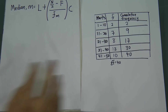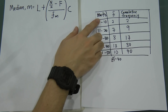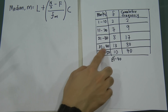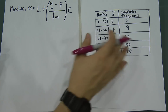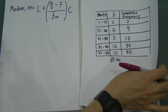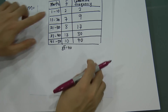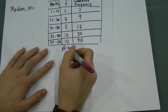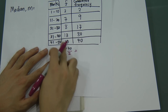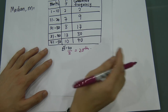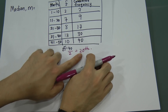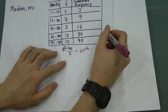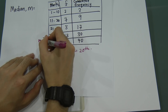Let's say we have this class now: marks 1 to 10, 11 to 20, 21 to 30, 31 to 40, with different frequencies, and the total frequency sums to 40. When we see this kind of table, the first thing — if you want to find the median — you have to find which class the median is located in. So we divide 40 by 2, meaning the median will be at the 20th value. So the median is located in the 31 to 40 class. This is the median class.